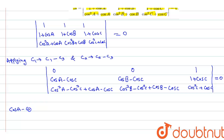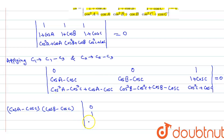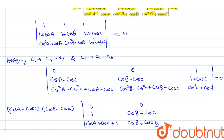यहांसे हमारे यह बन जाएगा: (cosA minus cosC) into (cosB minus cosC), determinant हो जाएगा. यहां हो जाएगा 0, यहां हो जाएगा 1. cosA plus cosC into cosA minus cosC plus cosC, so cosA plus cosC. इसी तरह से: 0, cosB plus cosC plus 1, और C3: [1, 1+cosC, cos²C+cosC]. इसका determinant equal to 0 है.